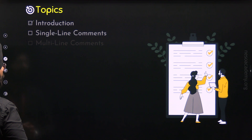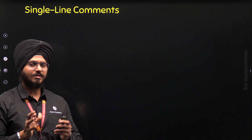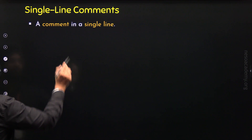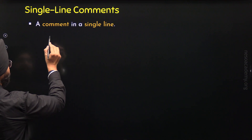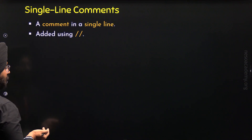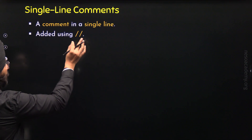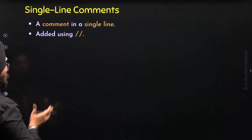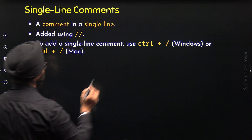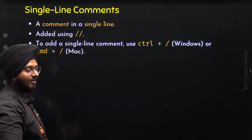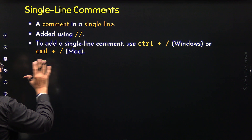Now let's move to the second topic where we will understand single line comments. What is a single line comment? A single line comment is a comment in a single line — the name itself suggests this. It is added with the help of two forward slashes. We can also use a shortcut: Control and forward slash in Windows, or Command and forward slash on Mac, so we do not have to type out the two slashes manually.